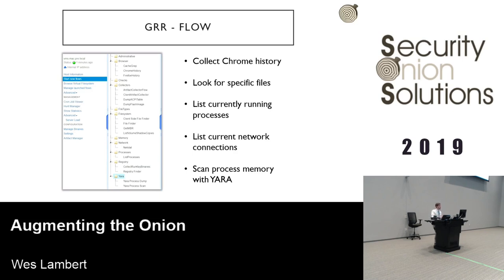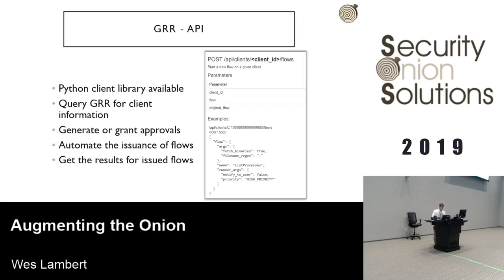You can gather things like Chrome history. If you want to run a file find flow, look for specific things on a host, or list currently running processes — it may be easier to automate this especially if you're doing it for a bunch of hosts and comparing results, rather than going to each individual endpoint manually. We can also scan process memory with Yara. Through the API you can query GRR for information about clients, issue flows, issue hunts — it's a great way to integrate and expedite that response and investigation process.